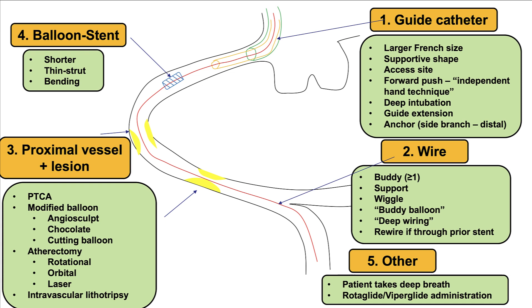There are five broad technique categories for how to deliver equipment, and those can be grouped into three main modes. The first is to increase guide catheter support, done by various techniques using different guide wires. The second is to modify the vessel, both the target lesion as well as the proximal vessel. The third is to use different types of equipment, for example shorter balloons or different types of stents, such as shorter and thin-strut stents.